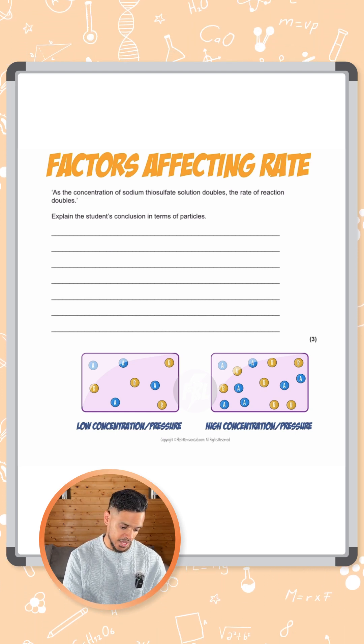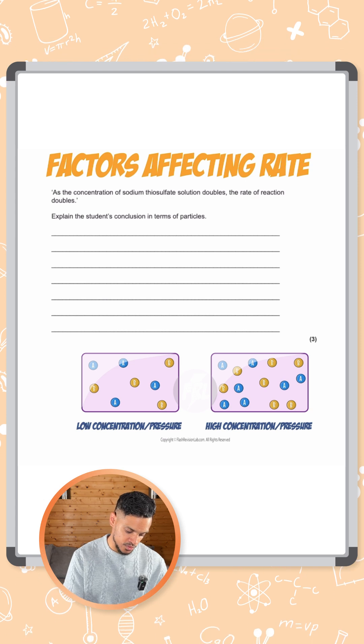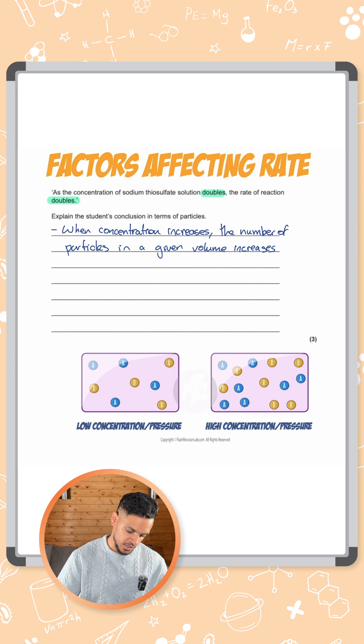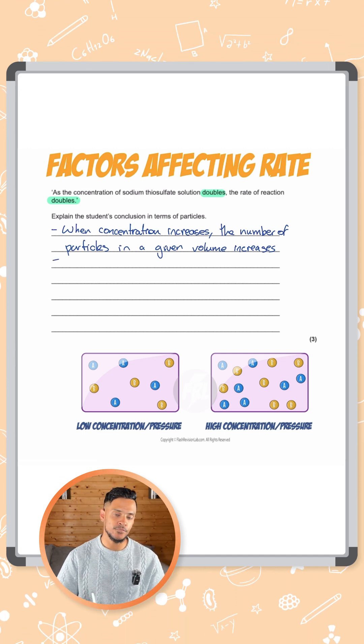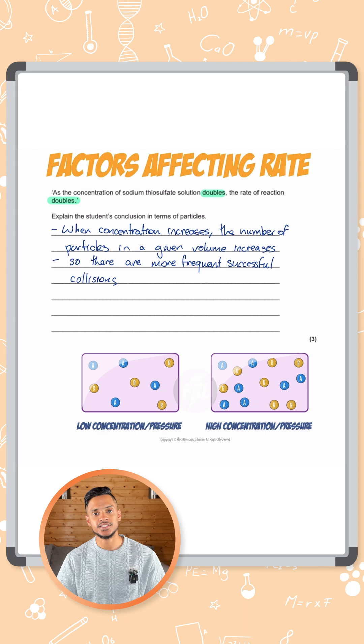So we need to explain the points I just said plus explain exactly what happens when you double these. So first of all we can say when concentration increases, the number of particles in a given volume increases. So there are more frequent successful collisions.